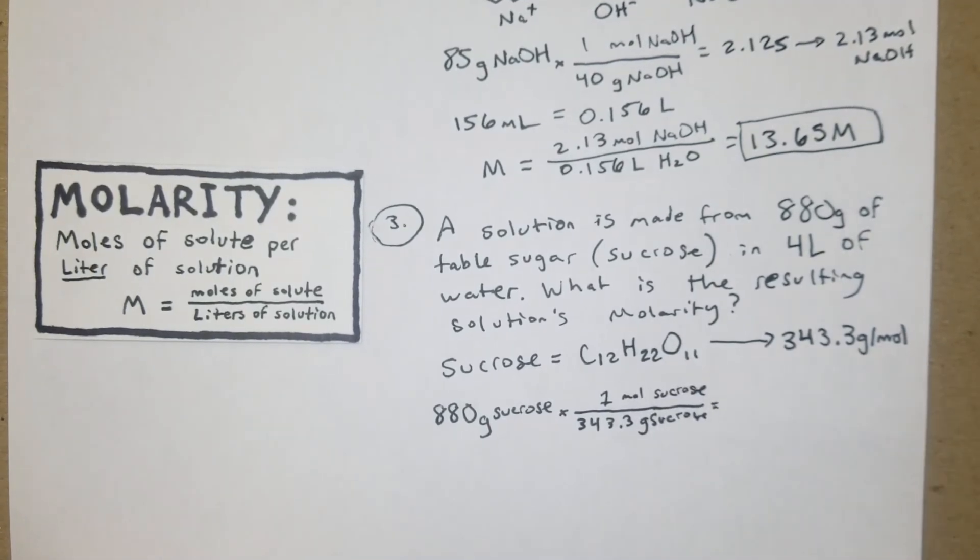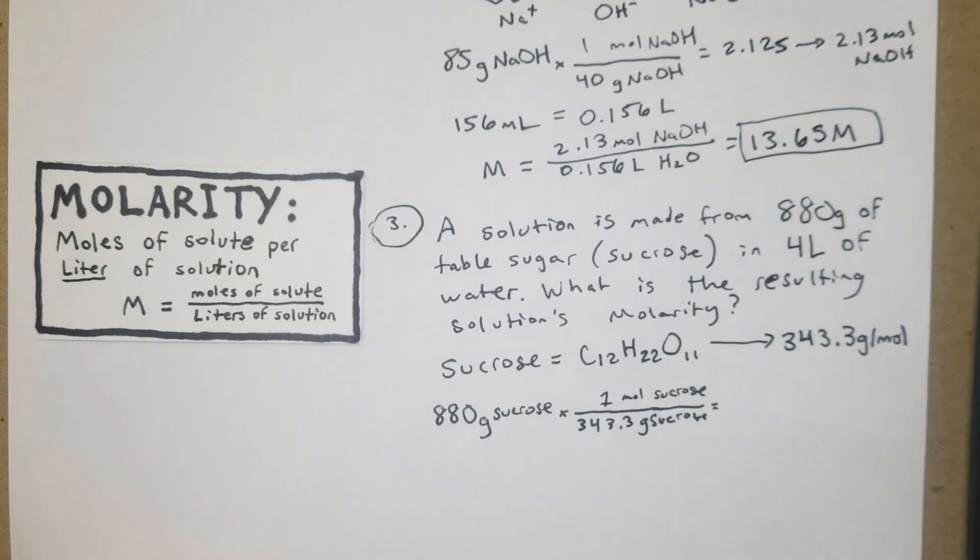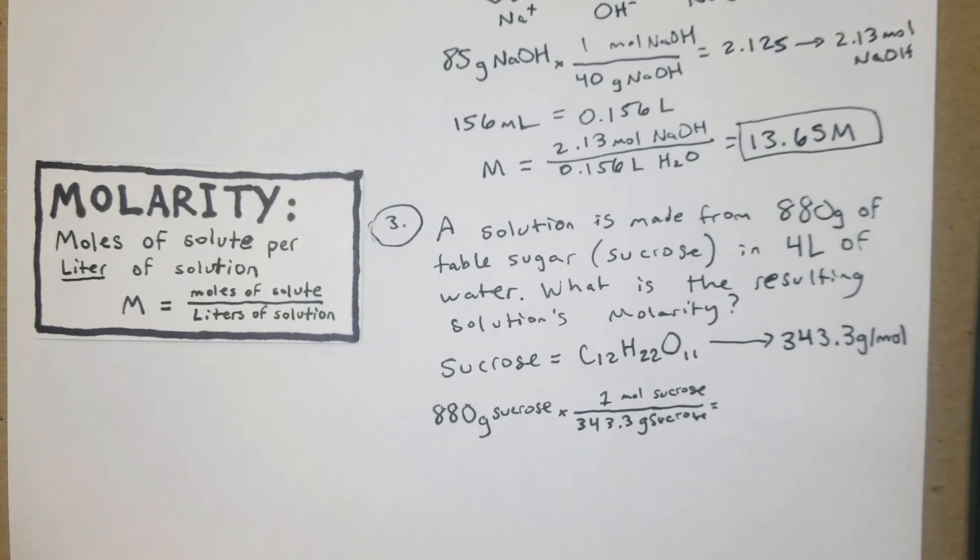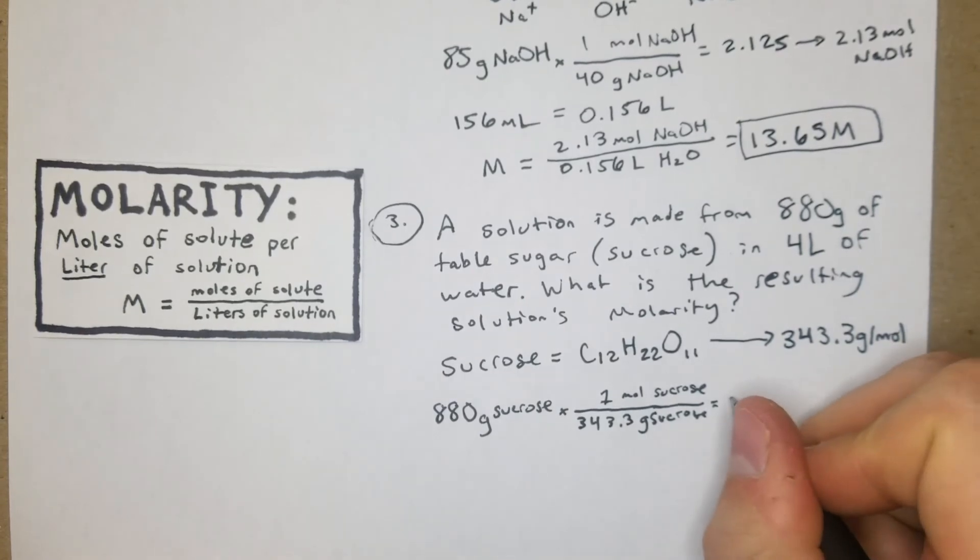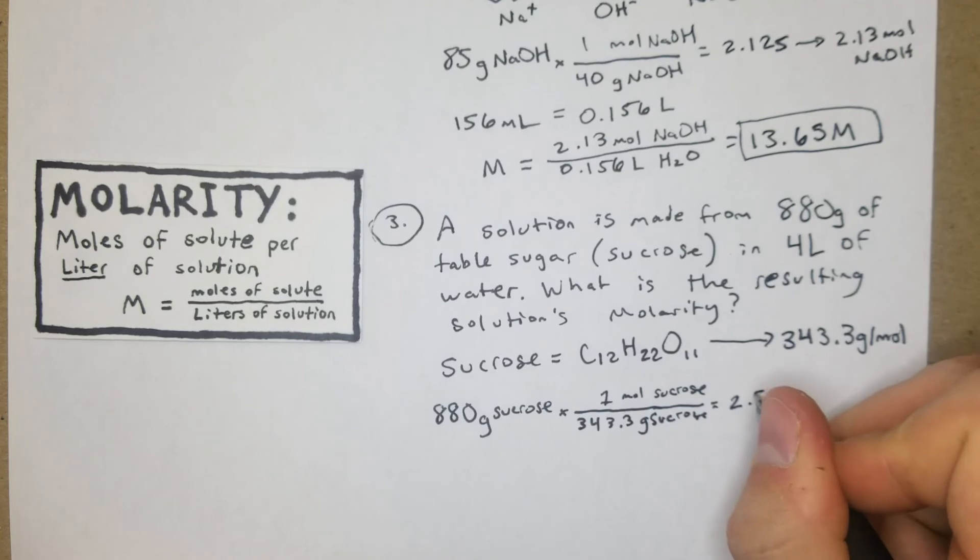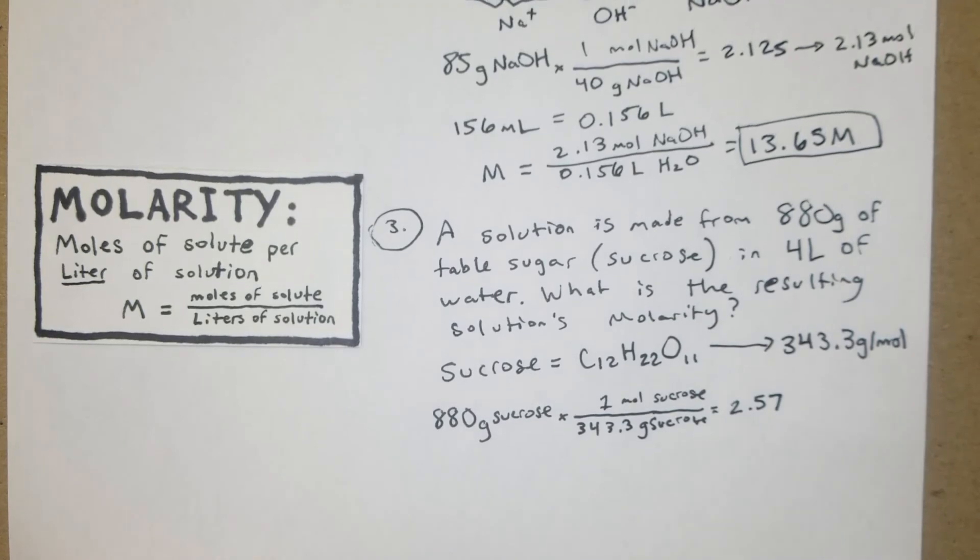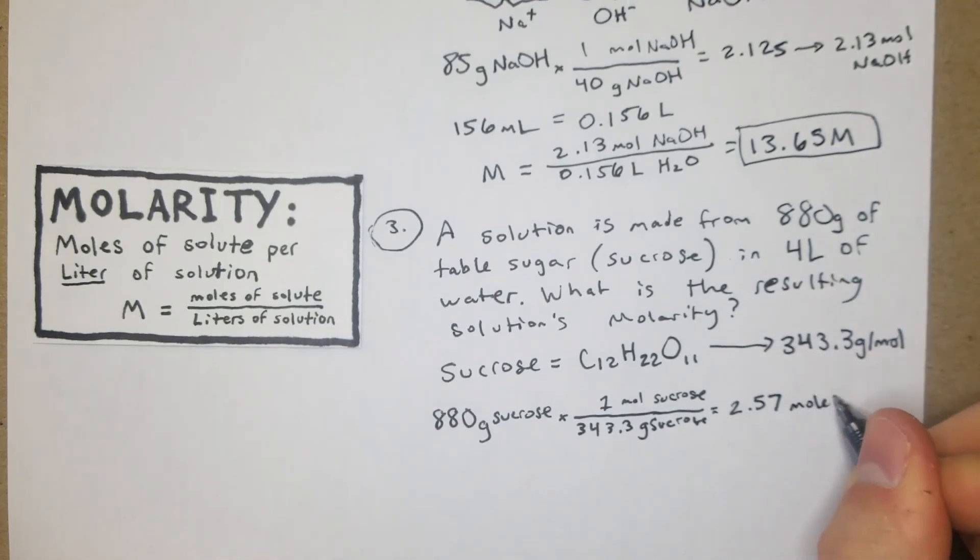Now we'll just go across: take 880 and divide it by 343.3. It's going to be 2.56, we'll round to 2.57 moles sucrose.